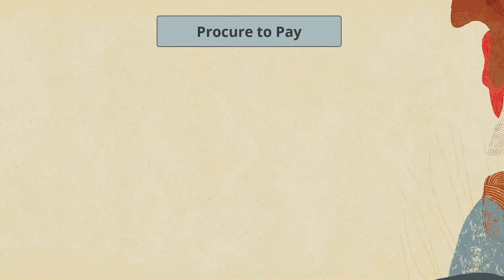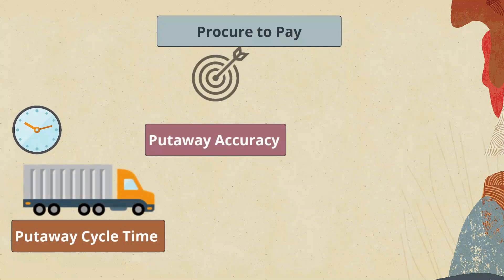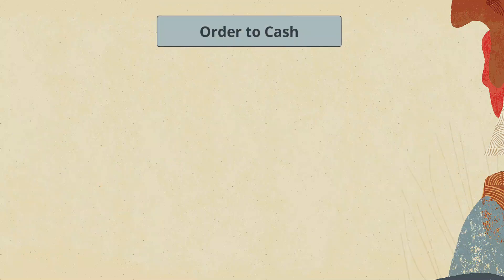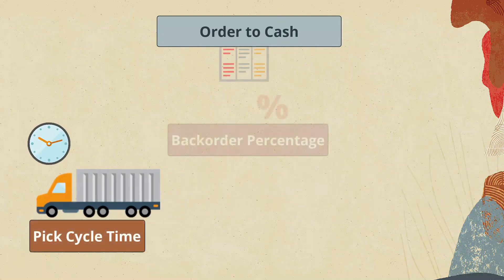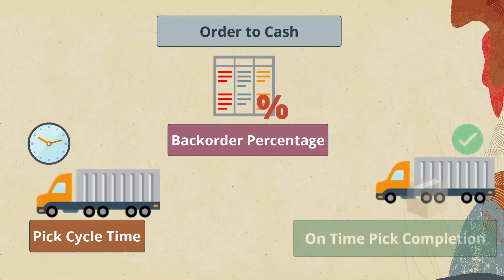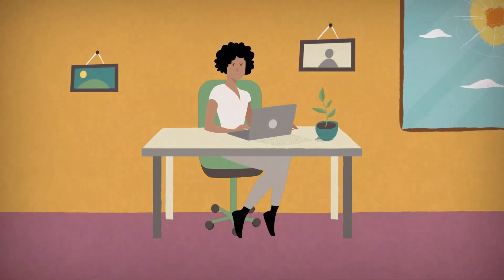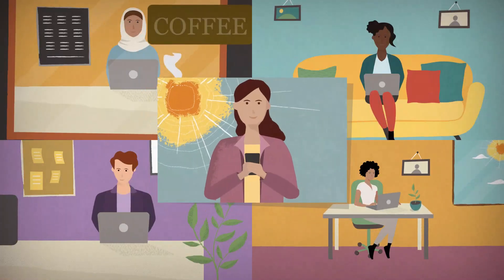The KPIs for inbound warehouse operations include Putaway cycle time, Putaway accuracy, and Warehouse location utilization. The KPIs for outbound warehouse operations include Pick cycle time, Backorder percentage, and On-time Pick completion. You can rely on JD Edwards to run your business and to capture its essence in the form of business data.